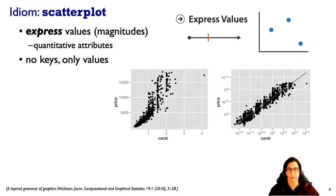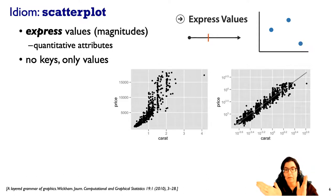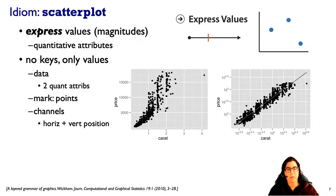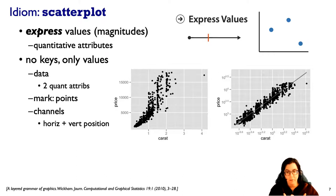Let's start with the scatter plot. With a scatter plot, we're expressing quantitative magnitudes — values — without any keys. Each of the two axes expresses a specific value. We'll systematically analyze these idioms according to data type, marks, channels, tasks they're good for, and scalability in terms of a thousand-by-thousand-pixel screen.